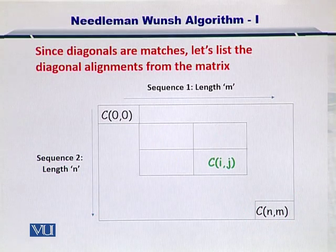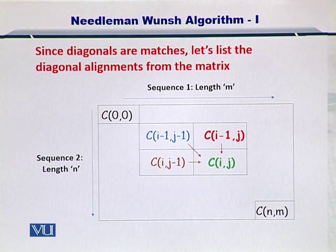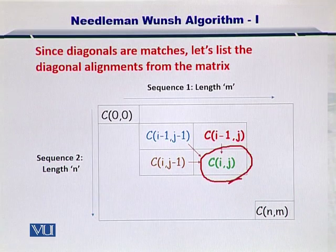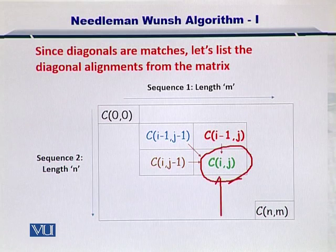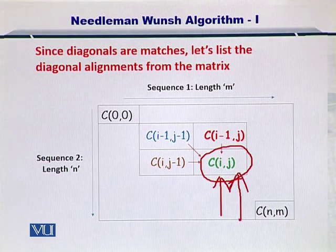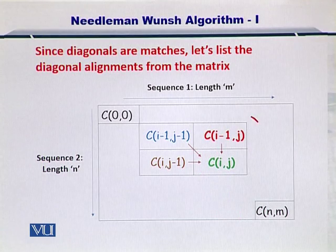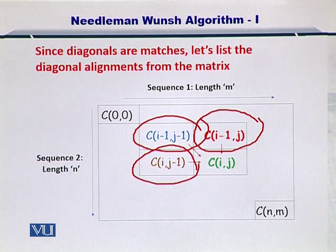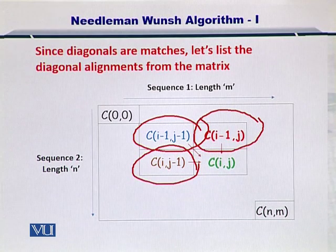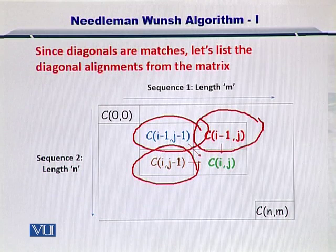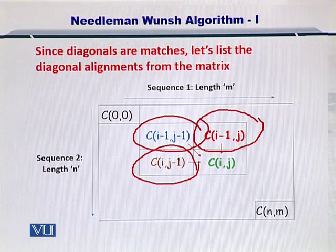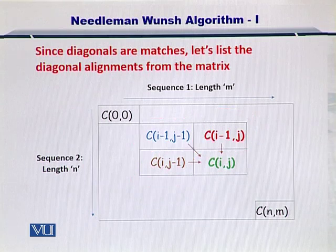So let's start. If you want to compute CIJ, that is any position in the matrix where you have I, that is the row, and J, that is the column, then you need to consider three elements: the one on top, the one on the diagonal, and the one on the left. Therefore, to compute any position in the matrix, you will have to see the three positions that are immediately on top, diagonal, and left side of that element. Please remember that.